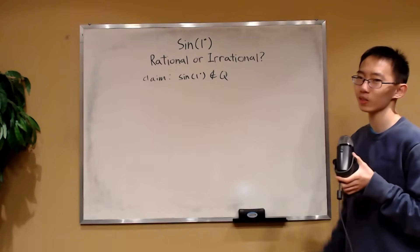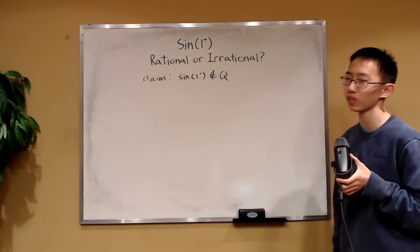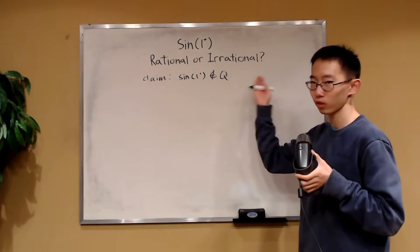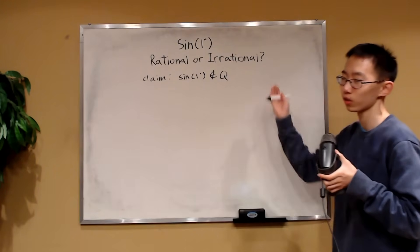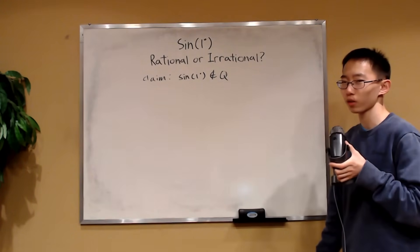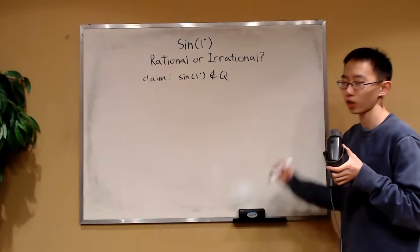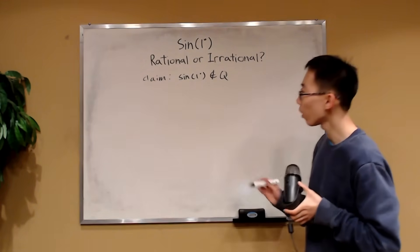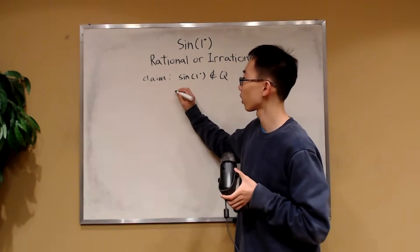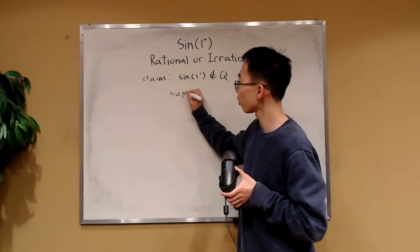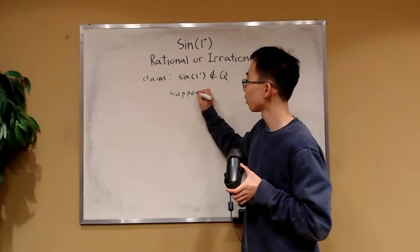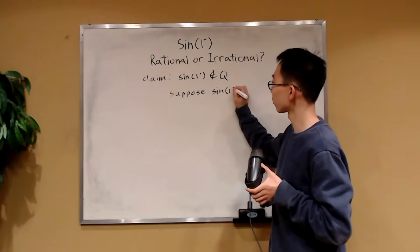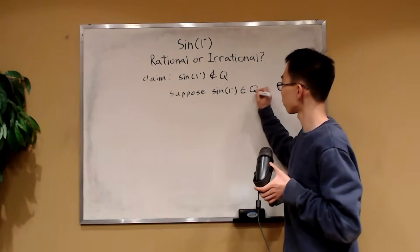Maybe we can start with proof by contradiction. Because showing that sine of one degree does not belong to the set of rational numbers would probably call for some sort of contradiction. So why don't we suppose, for the sake of contradiction, that sine of one degree is indeed rational.